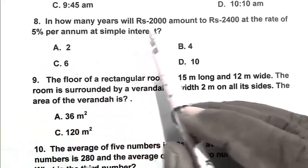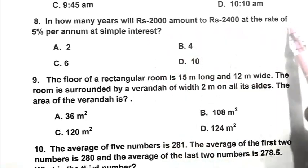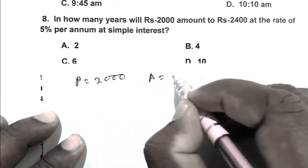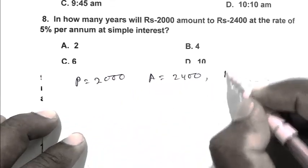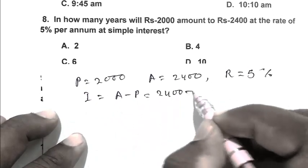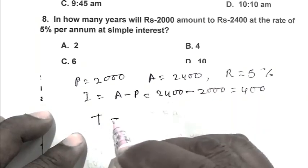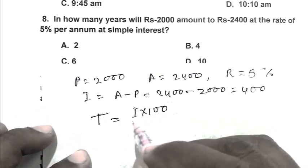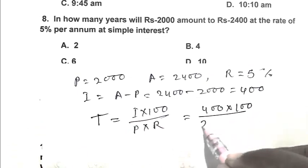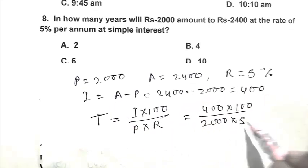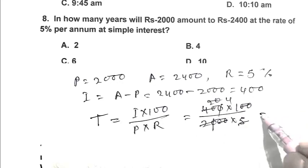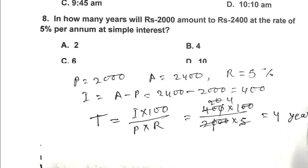Question number 8. In how many years will Rs. 2000 amount to Rs. 2400 at the rate of 5% per annum at simple interest? So friend, principal is Rs. 2000, amount is Rs. 2400. Rate is 5%. So interest is A minus P that is Rs. 400. So time T equals I multiplied by 100 divided by P into R. That is 400 into 100 upon 2000 multiplied by 5. So the answer is 4 years. So B is the right answer.